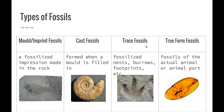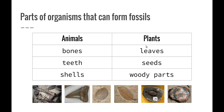Trace fossils are fossilized nests, burrows, or footprints — not actually any body part of an animal or plant, but evidence that they were once there. Lastly, true form fossils are fossils of the actual animal or animal part. For example, amber traps insects on the surface of trees and then hardens — as we know from Jurassic Park, where they claimed to have extracted dinosaur DNA from a trapped mosquito. Also, during the ice age, it is believed that full woolly mammoths were fossilized in a snap freeze.